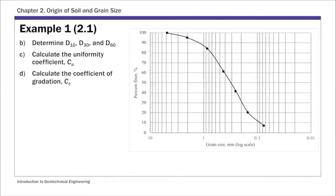For part b, we extract the D-values. D10 is by definition the particle size corresponding to 10 percent finer. To find it, start from the 10 percent mark on the y-axis, draw a horizontal line, and read the corresponding x-axis value. Reading from the graph, D10 is 0.09 millimeters.